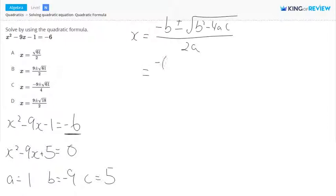Our b value is negative 9, so negative 9 here plus or minus square root of negative 9 squared minus 4 times 1 times 5 divided by 2 times a, which is 2 times 1.